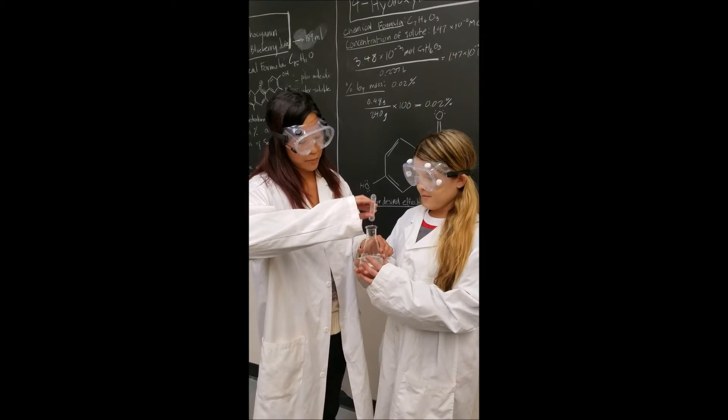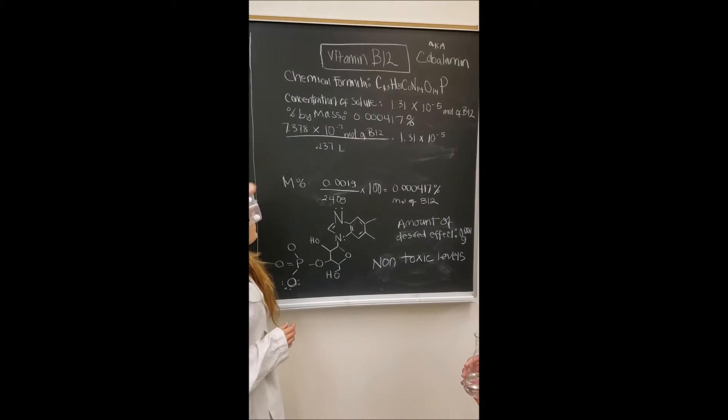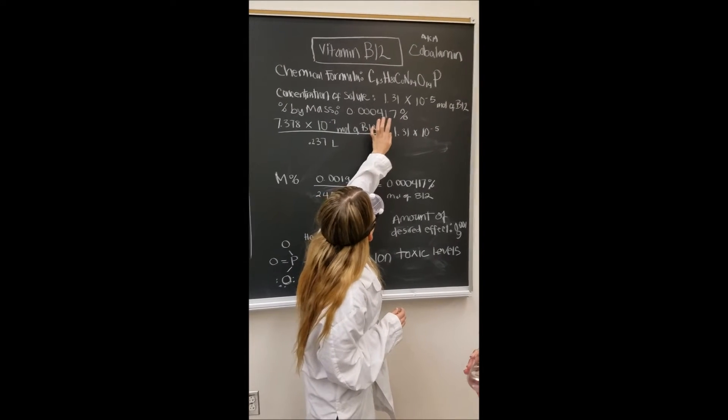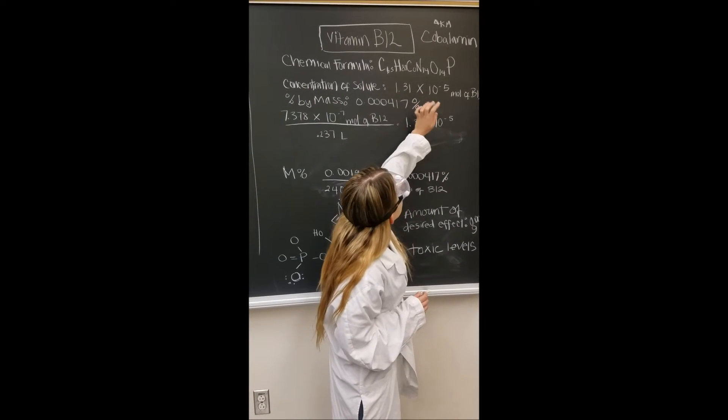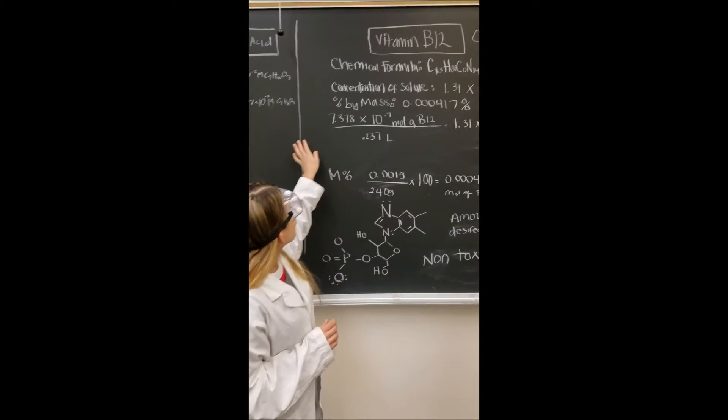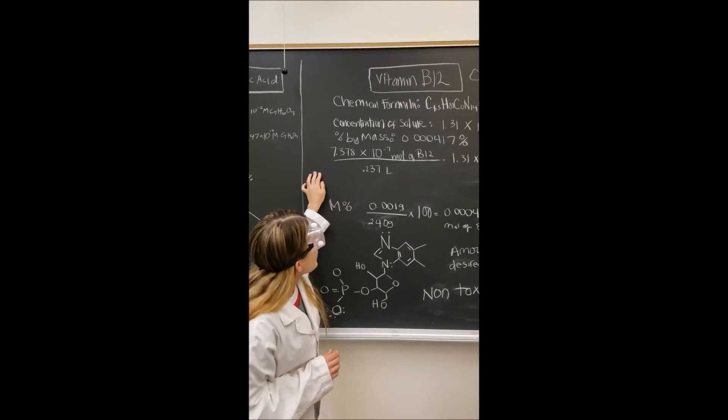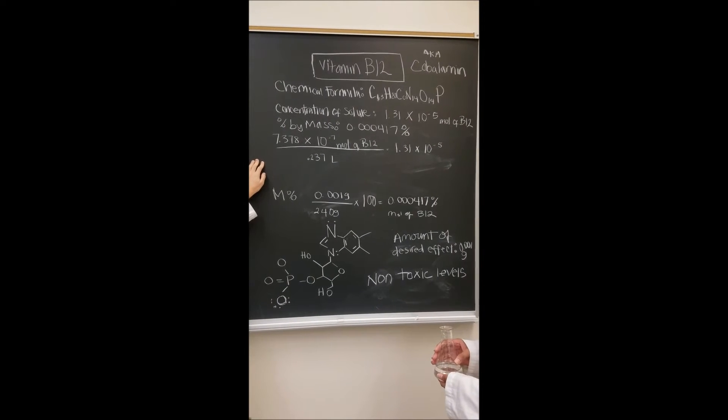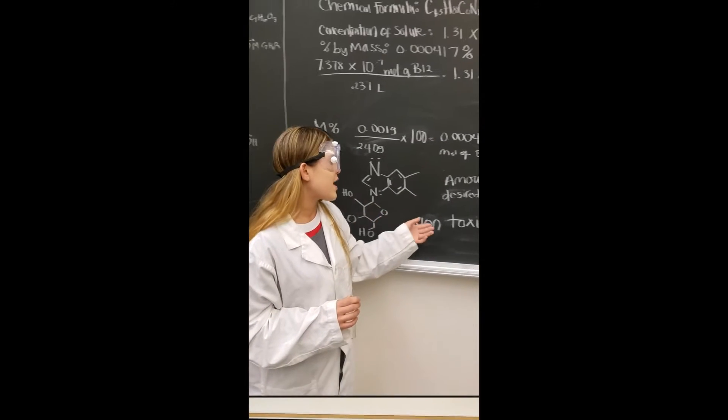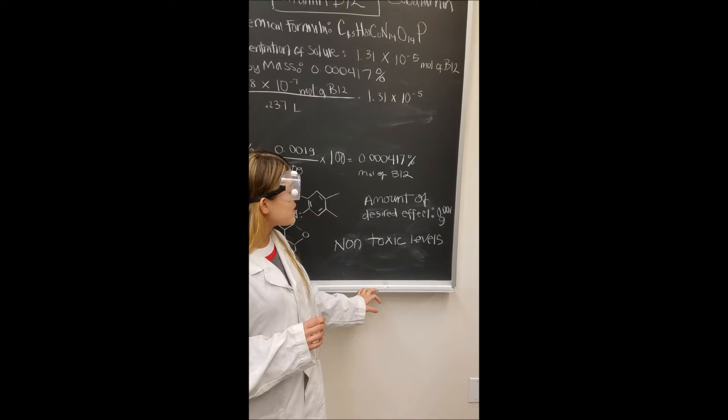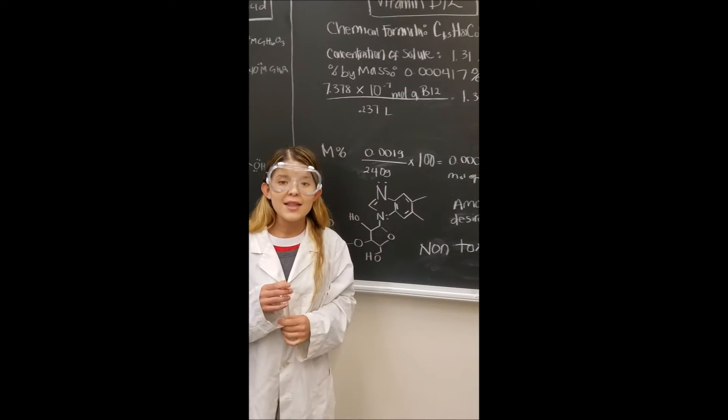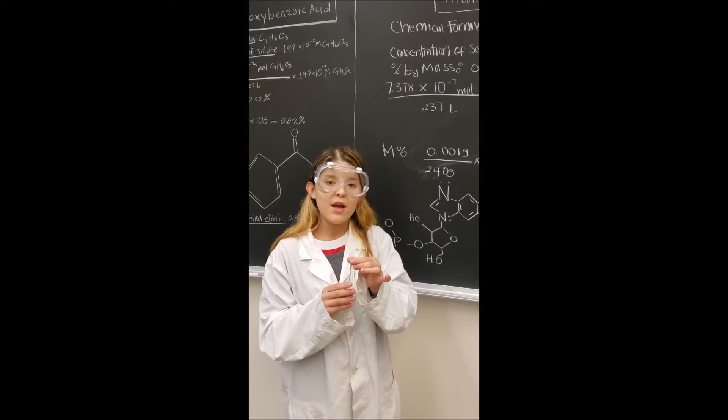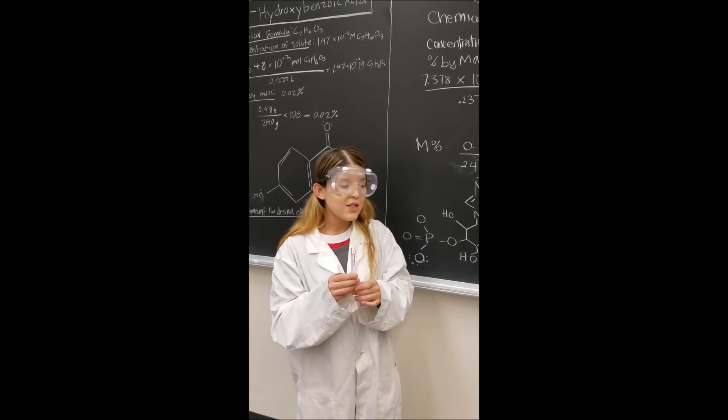This is vitamin B12 and its chemical formula is C36H58CoN14O14P. And for the concentration of solute, we got 1.3 times 10 to the negative 5th mole of B12, and the amount for desired effect is going to be 0.001 grams, and there are no toxic levels reported. So this is going to be the 0.001 grams of vitamin B12 that we're going to be adding to our drink.